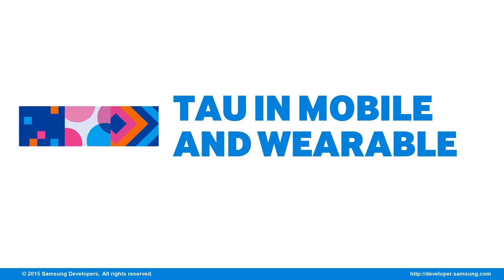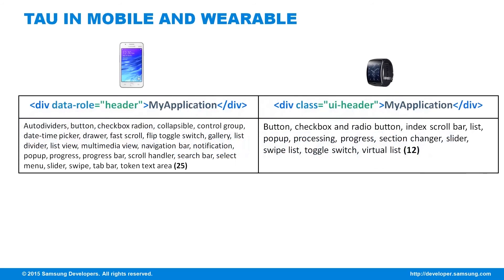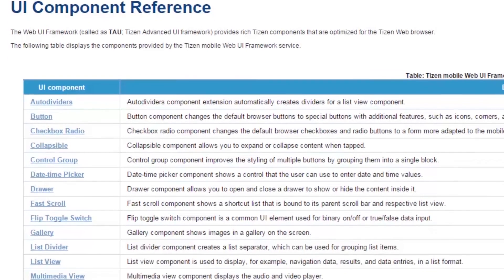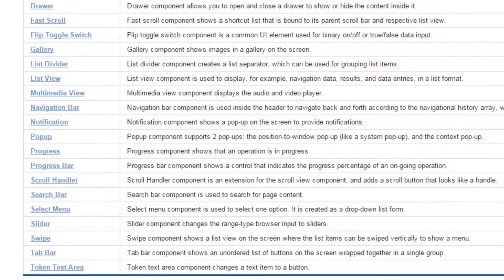Tizen Mobile and Wearable have the same application page layout — both have page, header, content, and footer. The only difference is in using them: for mobile, data-role attribute is used, while wearable makes use of the class attribute. Page navigation is also the same — both use either href or TAO API. In UI components, wearable has fewer compared to mobile, and reference links for both mobile and wearable UI components are provided in the description below.